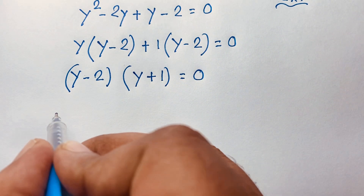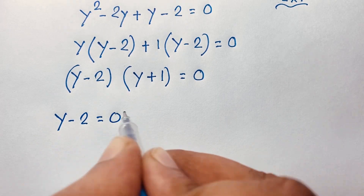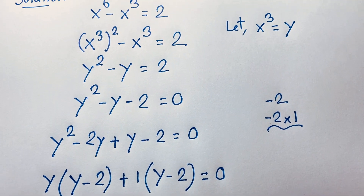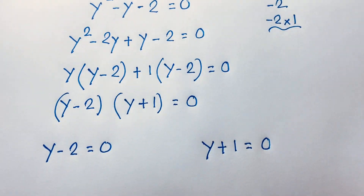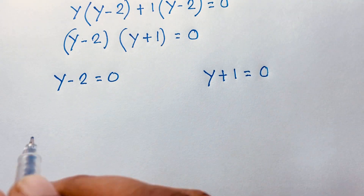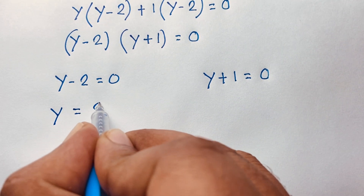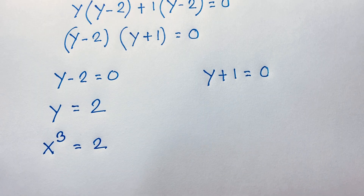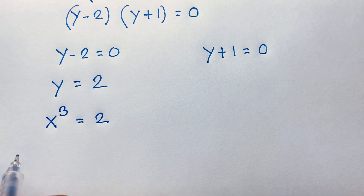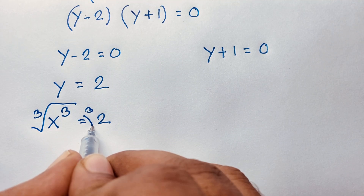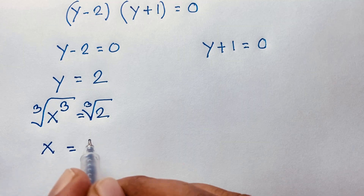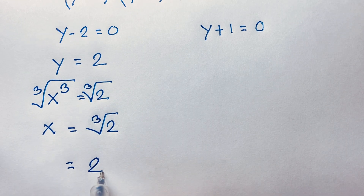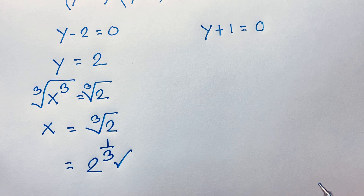We find two cases. Our first case is y minus 2 is equal to 0, and the second case is y plus 1 is equal to 0. Recall that we set x to the power 3 equal to y. So from the first case, y is equal to positive 2, which means x to the power 3 is equal to 2. Then, taking the cube root of both sides, x is equal to cube root of 2, which is 2 to the power 1 over 3. This is our final answer for this case.